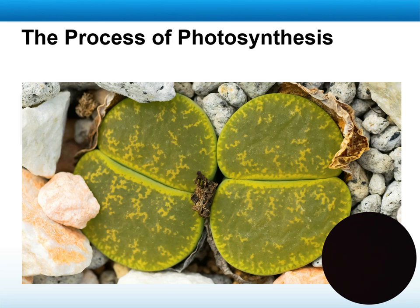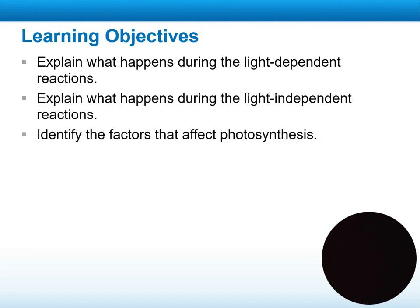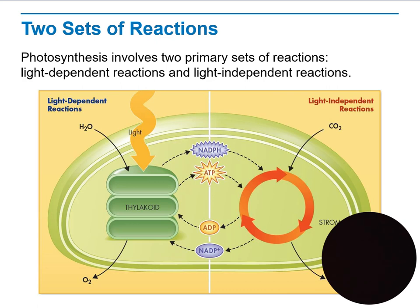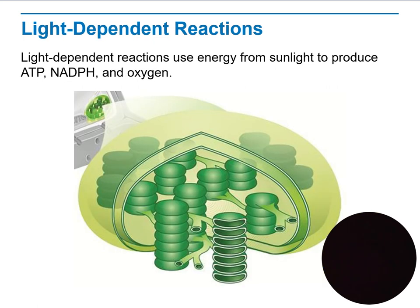After covering that, we will go to section 9.3, the process of photosynthesis. During this lesson, we will explain what happens during the light-dependent reaction and the light-independent reaction, how they differ from each other, and identify the factors that affect photosynthesis. The light-dependent reaction uses energy from sunlight directly to produce ATP, NADPH, and oxygen. We will explain exactly what NADPH means. The light-dependent reactions occur inside the thylakoid of the chloroplasts, and we will go through them in detail.